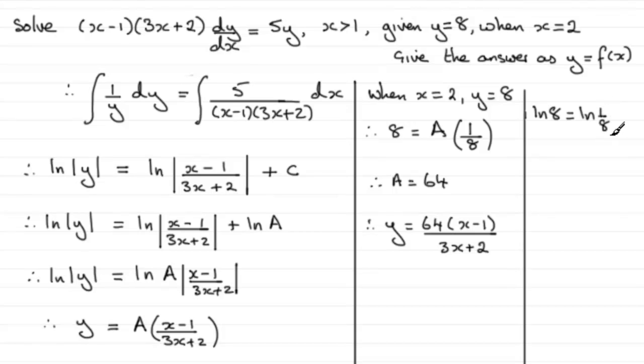So you can see that to get c, all I need to do is take away the natural log of 1/8 from both sides. So you get c = ln(8) - ln(1/8), and when I subtract two logs it's the same as dividing.